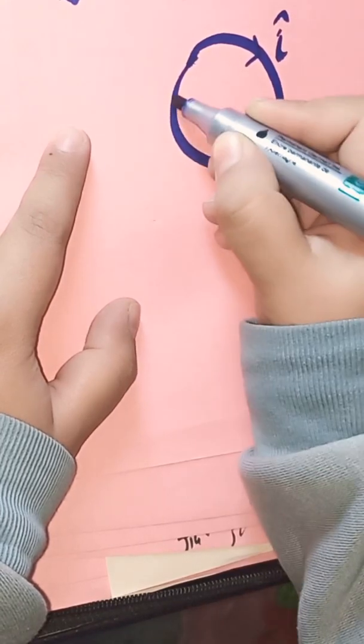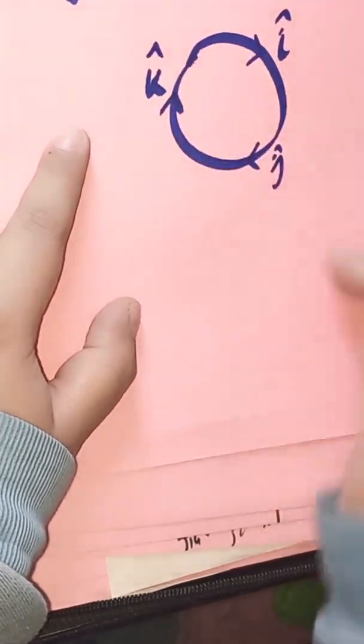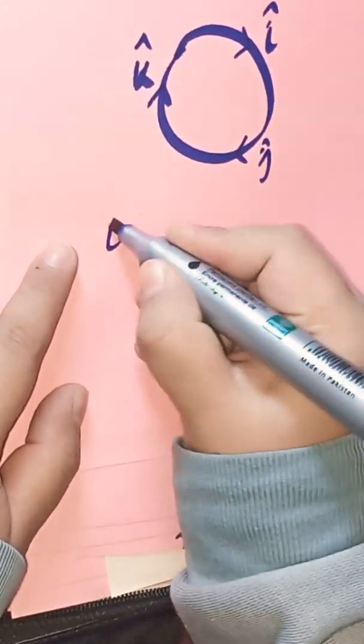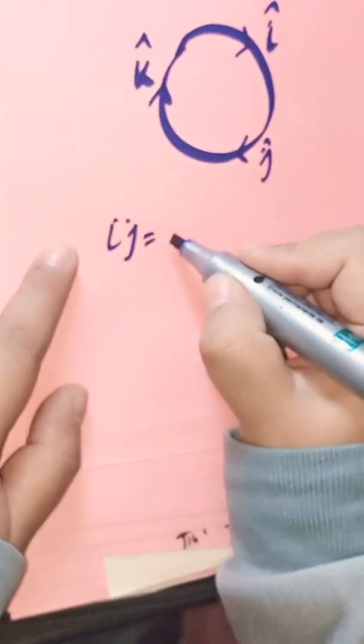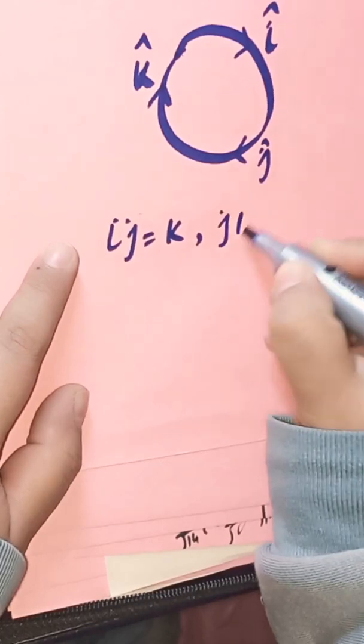If you don't know about this cycle then you are not able to solve the vectors relating questions. As you can see that I have drawn a cycle which represents the three arrows and the three vectors i, j, and k.